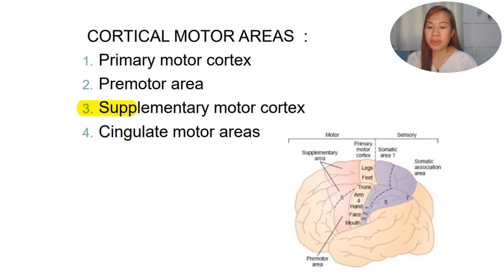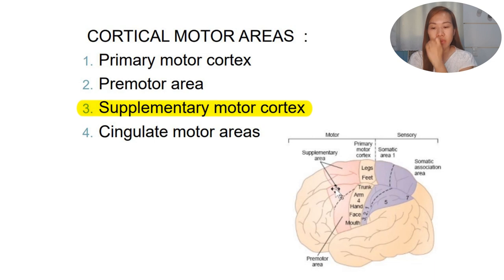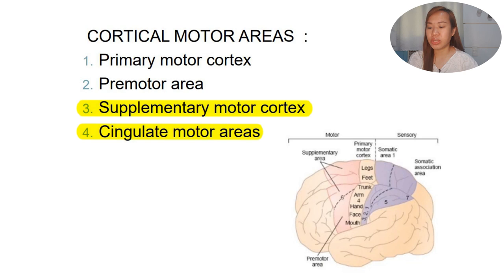Another area is the supplementary motor cortex, which functions to rehearse complex motor sequences. In our brain, we already try to think about how we're going to do these complex motor sequences - this is the responsibility of the supplementary motor cortex. Another portion of the cortical motor area would be the cingulate motor areas, which we'll talk about more on the next slides.